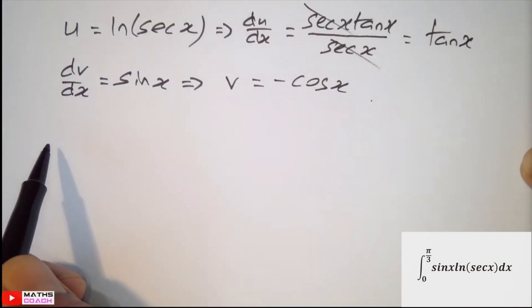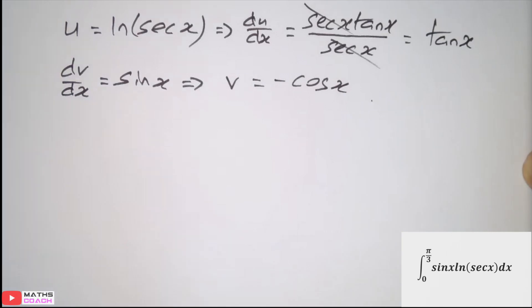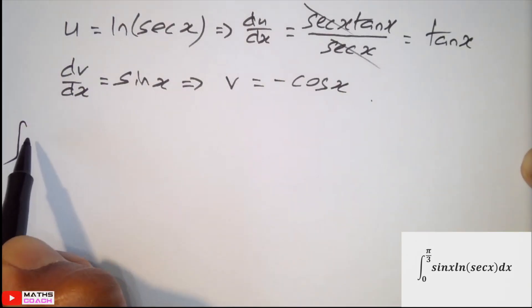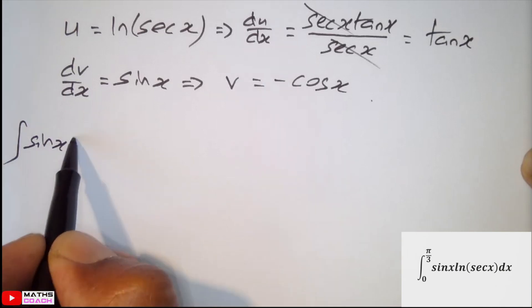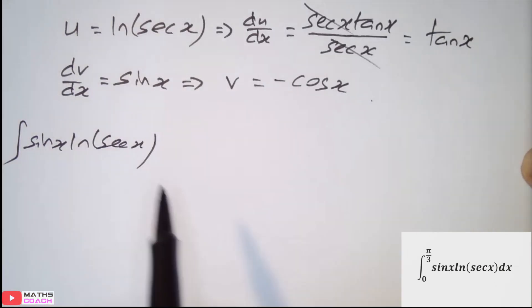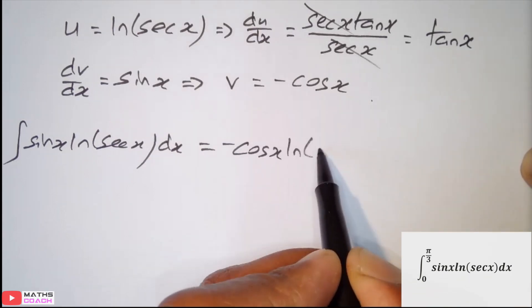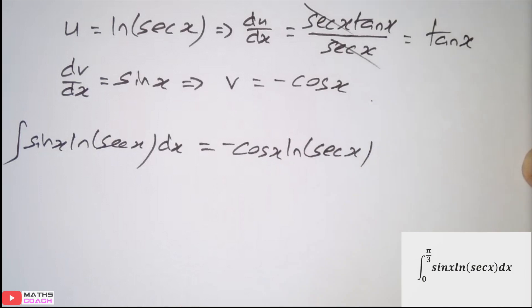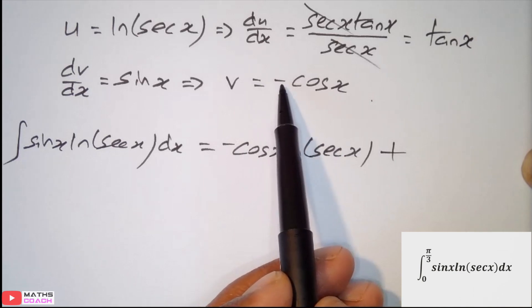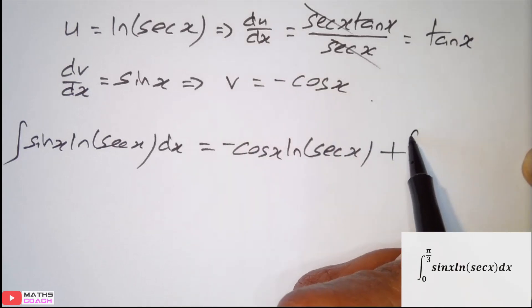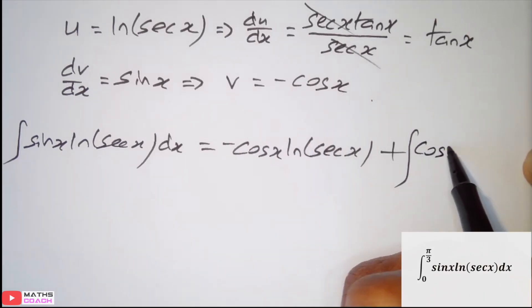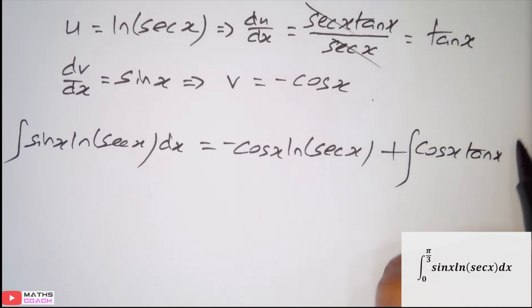So, let's begin our parts. So, integration of sin x ln sec x with respect to x equals uv. So, negative cos x ln sec x plus because there's a negative here. So, the two negatives will cancel. And now, I'm going to integrate cos x tan x with respect to x. Now, this is the confusing bit. What do I do here?